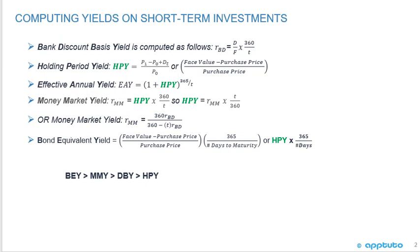The money market yield is equal to 360 times the bank discount yield divided by 360 minus T times the bank discount yield. The bond equivalent yield is the holding period yield times 365 over days. The money market yield and the bond equivalent yield are very similar, except that for the bond equivalent yield, we're using 365 in the numerator.